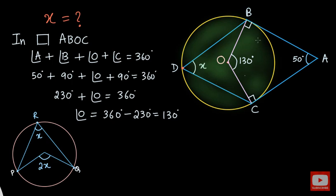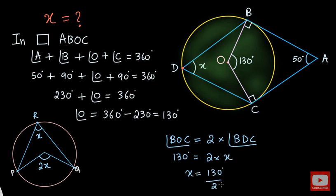Applying this property in the figure, we get the angle at the center, that is angle BOC, equal to two times the angle at point D, that is angle BDC. Now, angle BOC is 130 degrees. This is equal to two times angle BDC which is X. So from here we get X equal to 130 degrees divided by 2 which equals 65 degrees. The value of this angle X is 65 degrees.